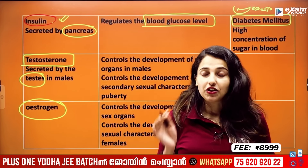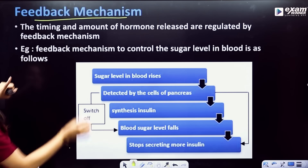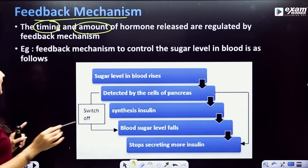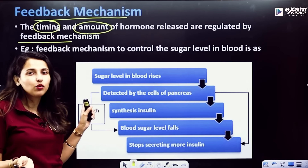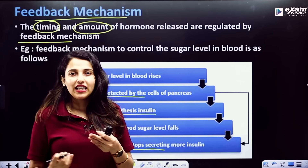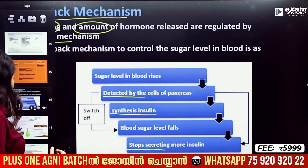Now we call it the feedback mechanism. The amount of hormone released is regulated by the feedback mechanism. For example, blood glucose levels in the blood trigger insulin secretion, which then regulates the glucose level — this is the feedback mechanism.